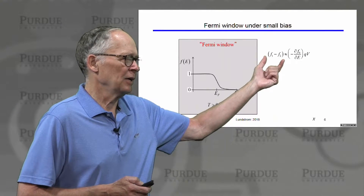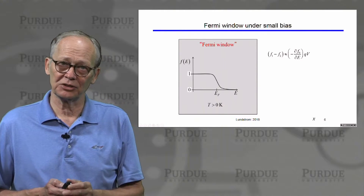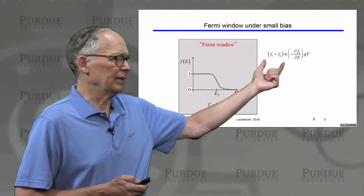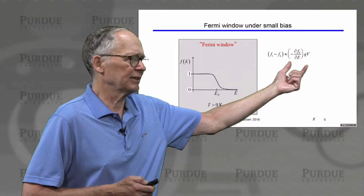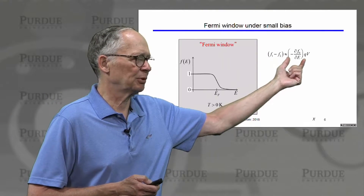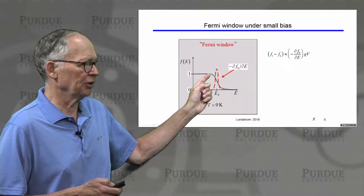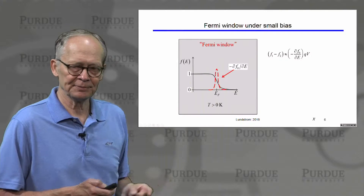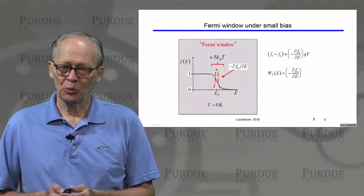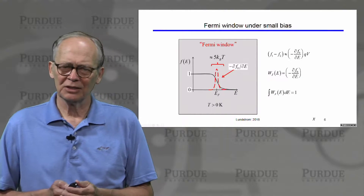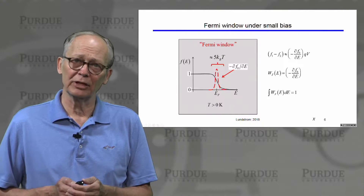The important question is: over which range of energies is F1 minus F2 non-zero? Those are the energies that contribute to current. For a small applied voltage, a Taylor series expansion shows that the Fermi window is proportional to the slope of the Fermi function. That slope shows a peak near the Fermi energy, a few kT wide, with area equal to 1 — so it looks like a delta function, which we can approximate more precisely at lower temperatures.